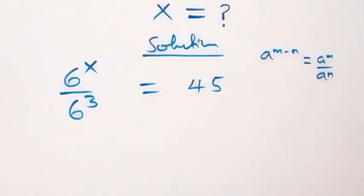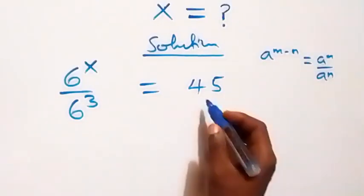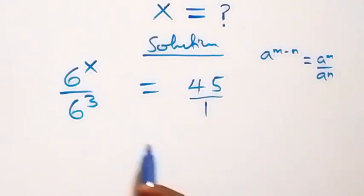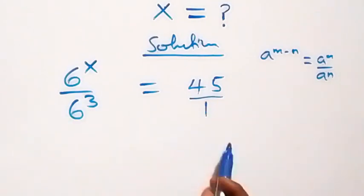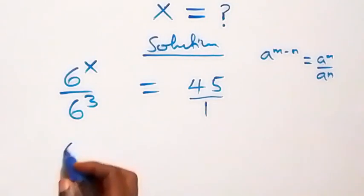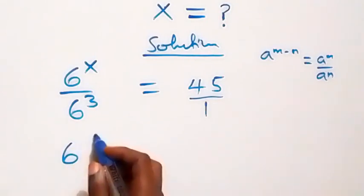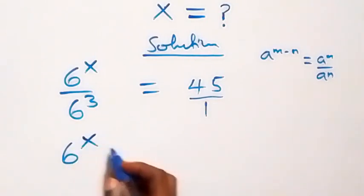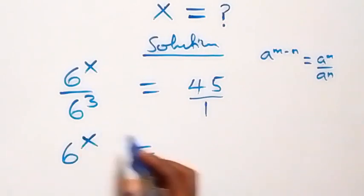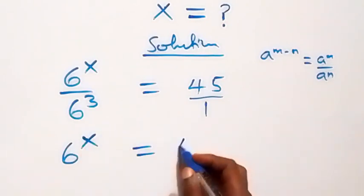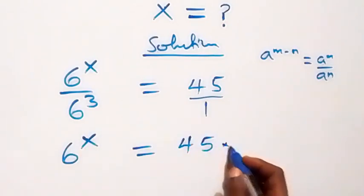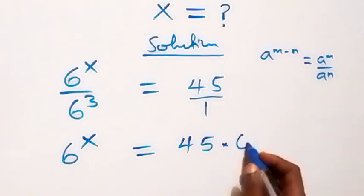Then, from what we have here, this is also 45 over 1. And we can cross multiply: 6 raised to power x times 1, still 6 raised to power x, then equals to 45 times 6 raised to power 3.